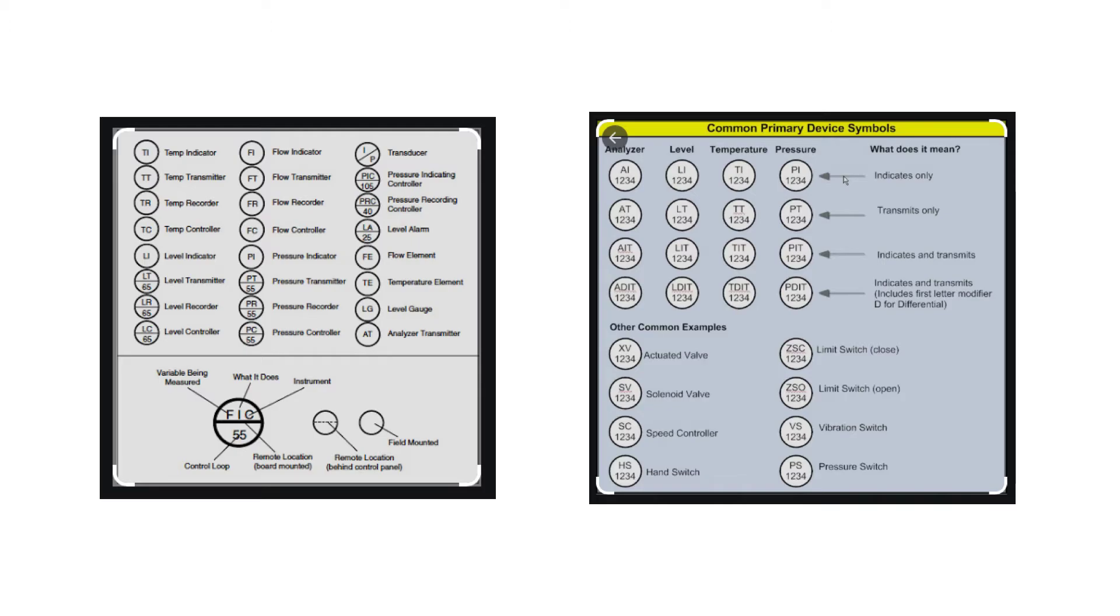So the first letter on the tag is a variable being measured. So whether that's flow, pressure, temperature. What it does - does it indicate, does it record, does it transmit? And then you also have what type of instrument it is: a control valve, a gauge, an alarm, a transducer, a transmitter, etc.